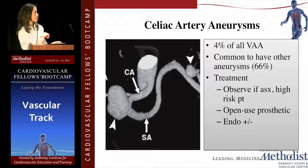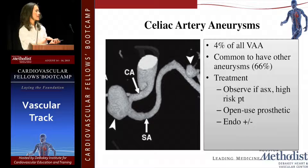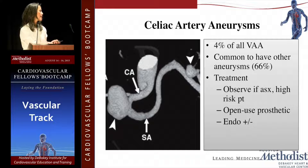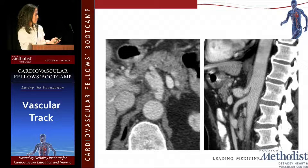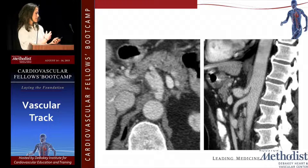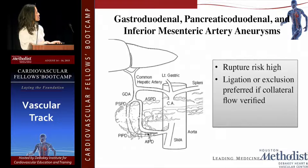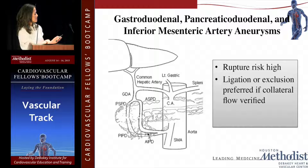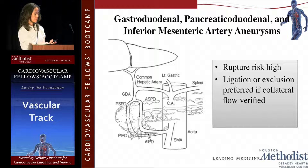Celiac artery aneurysm is also very rare and tends to be associated with other aneurysms. Treatment is observation if small; don't treat unless it exceeds three centimeters. These are generally not amenable to endovascular stenting and would need operative surgical resection or bypass. An example: a celiac artery aneurysm related to a focal dissection — not at the origin, but a few centimeters beyond it, which is typically where dissection occurs. Keep in mind that aneurysms can occur anywhere in the mesenteric system — in the GDA, pancreaticoduodenal, or IMA as well.